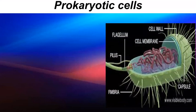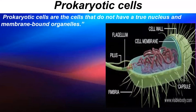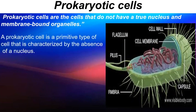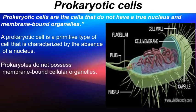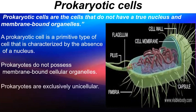Let's talk about the two kinds of cells. Living organisms may contain only one type of cell, either a prokaryotic cell or a eukaryotic cell. Prokaryotic cells are the cells that do not have a true nucleus and membrane-bound organelles. A prokaryotic cell is a primitive type of cell characterized by the absence of a nucleus. Prokaryotes do not possess membrane-bound cellular organelles and are exclusively unicellular. Some examples of prokaryotes are mycoplasma, virus, bacteria, and cyanobacteria, also known as blue-green algae.